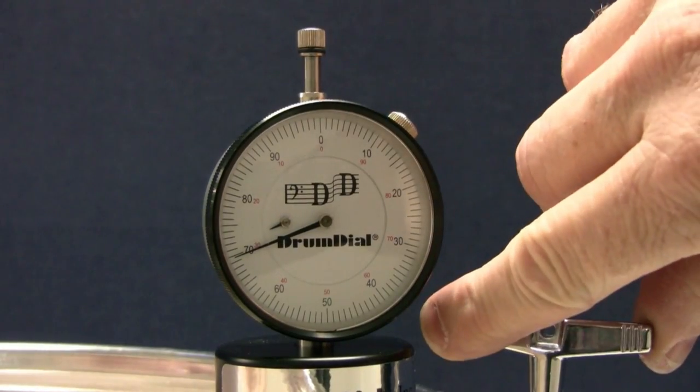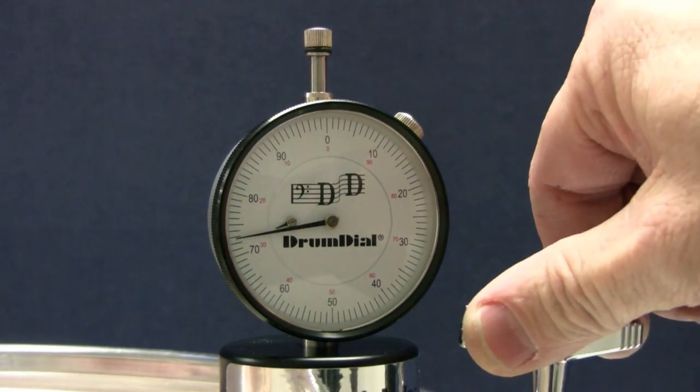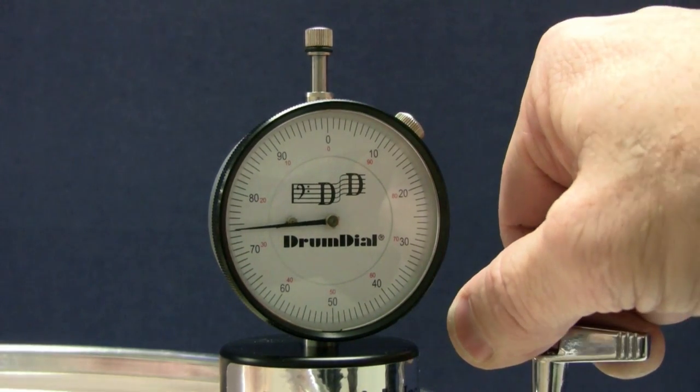With drum dial, you can actually see the head tension skip. This is not caused by a tight T-lug that's binding. This is caused by the drum head catching on the bearing edge.